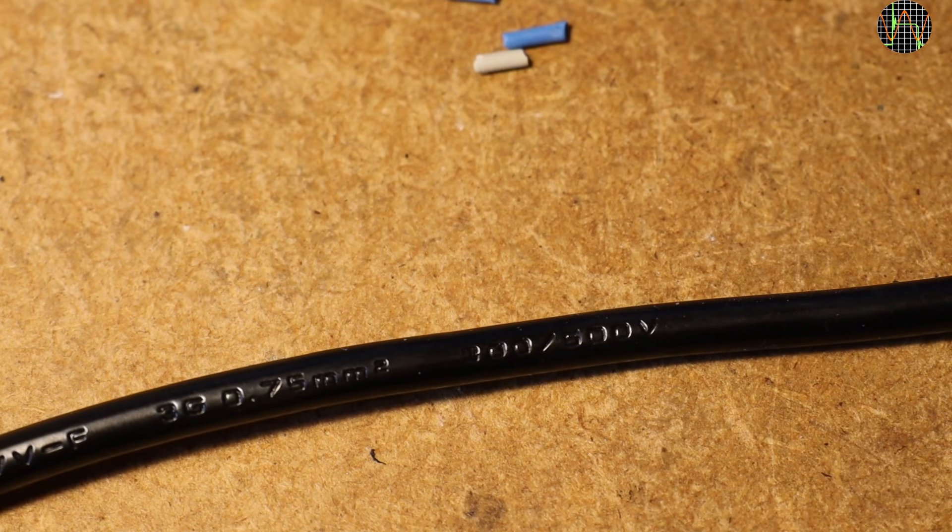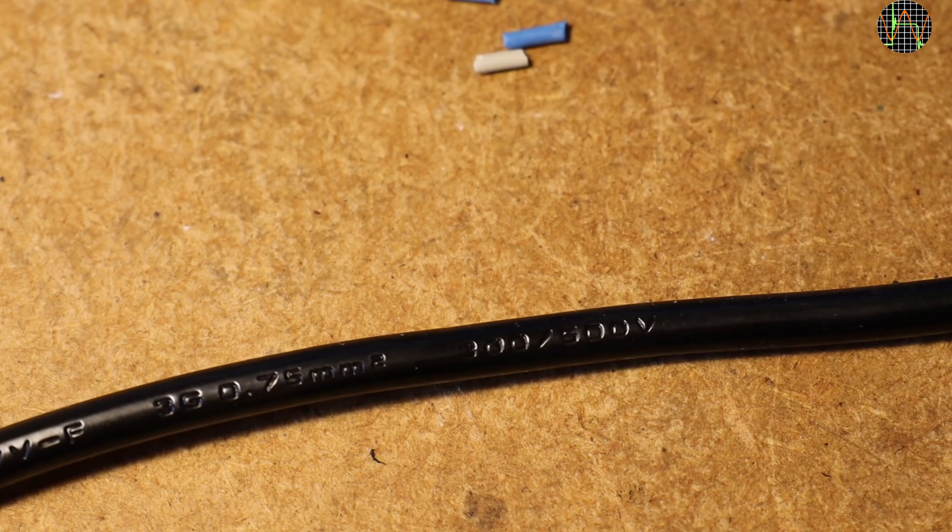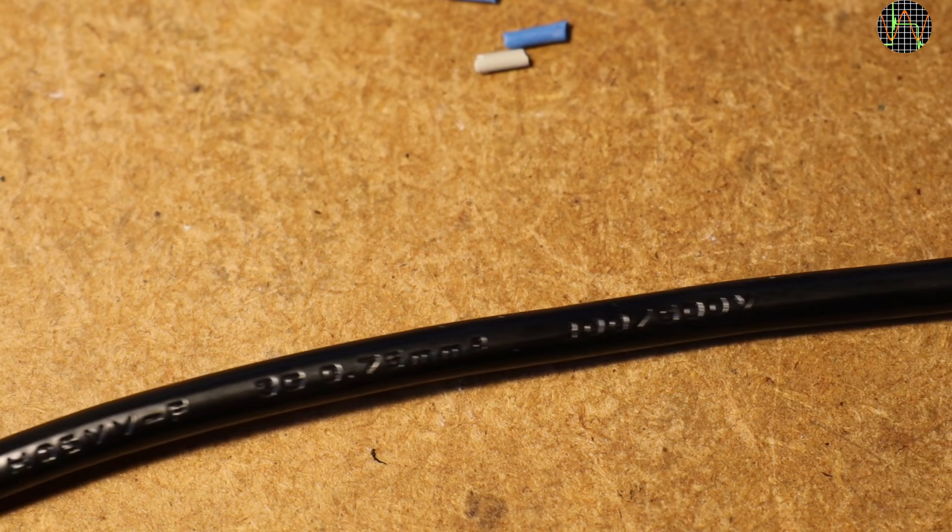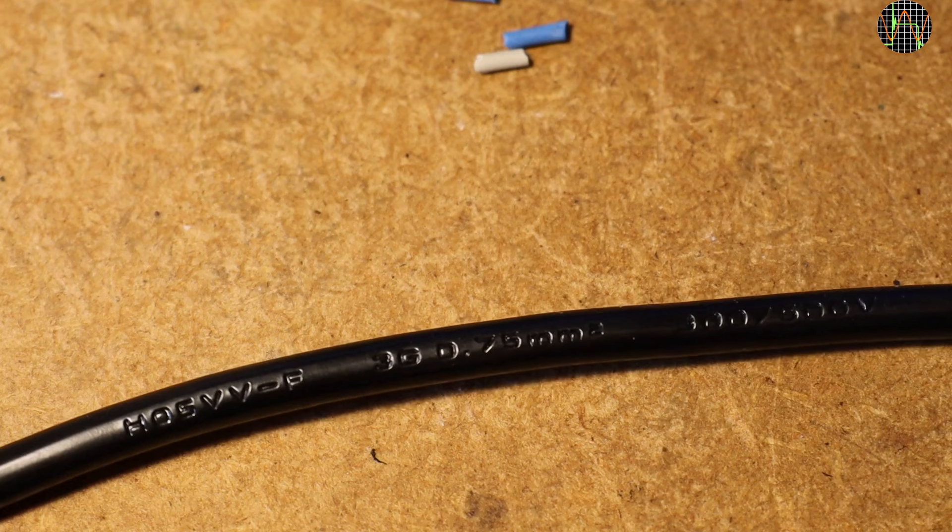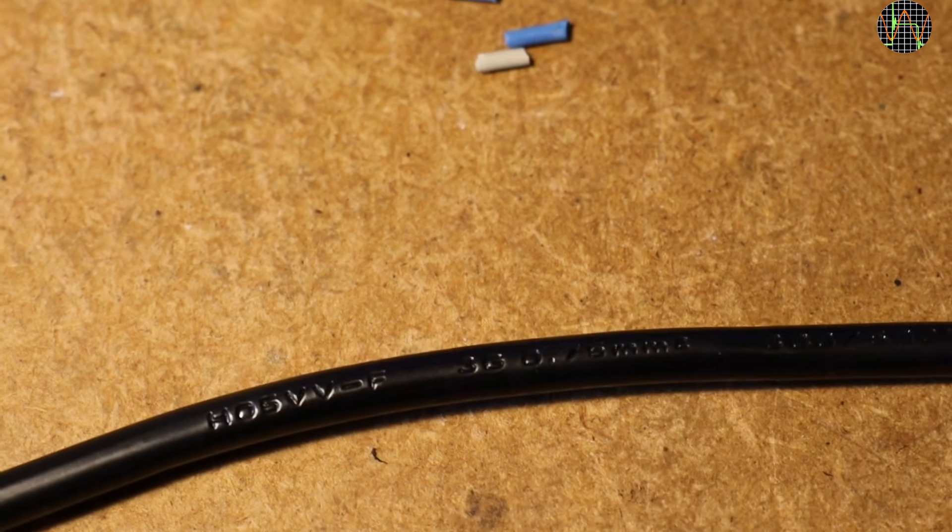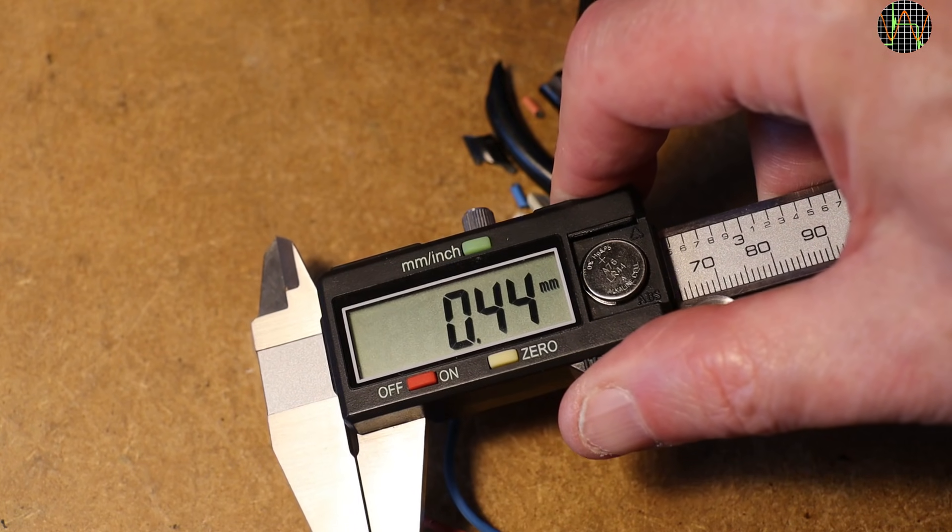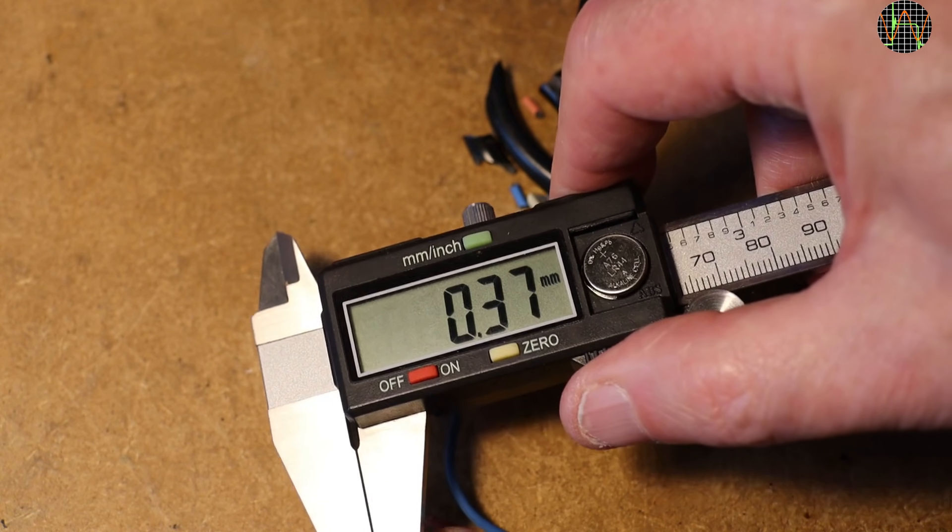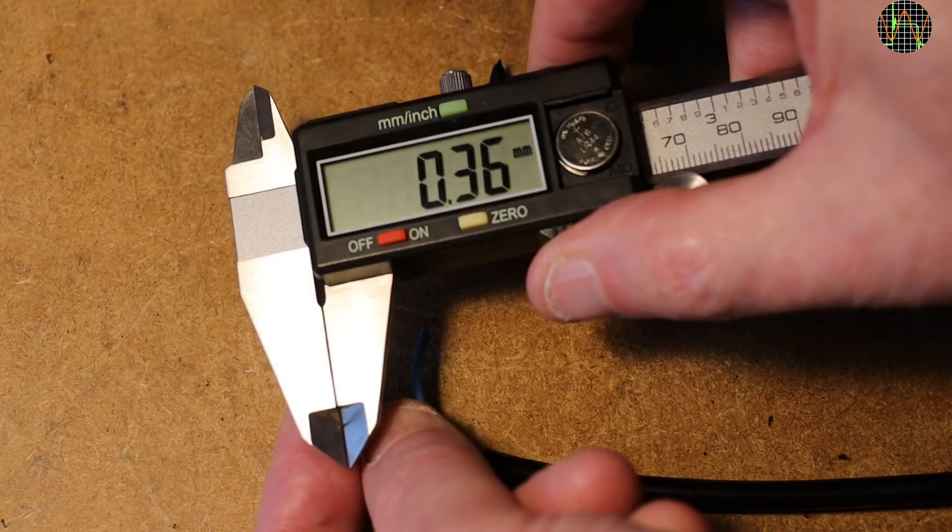Wire size of 0.75 mm² is a common European standard and roughly the same as AWG18. 0.75 mm² means a diameter of about 1 mm, and I measure here clearly far less than 1 mm.